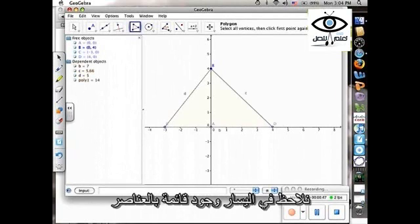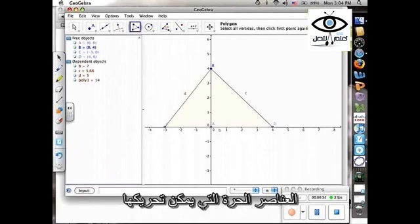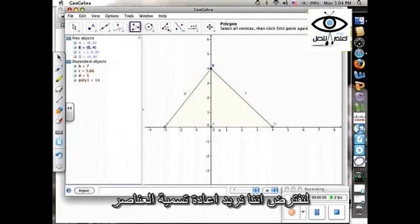If you look over here on the left, it lists the free objects, which are the ones that we can move, and then the dependent objects, which are the lengths of the sides and the area of our triangle, polygon one.